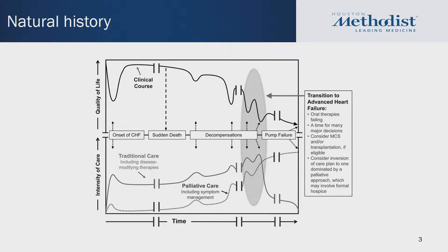Just as a transition from what Arvind was talking about — he was discussing acute decompensated heart failure and cardiogenic shock — this is the clinical course of somebody with chronic stable heart failure who has an onset of CHF. Your risk of sudden cardiac death increases immediately after you've had heart failure, and then there is a period where you're fairly stable before patients start having decompensations and eventually pass away from pump failure.